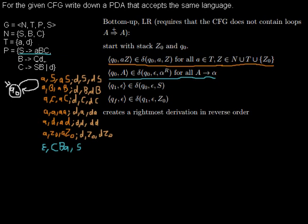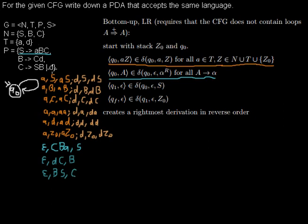I want to do the same for all the other rules. For the second rule, I read epsilon from the input string, read 'd', 'c' from the stack in reverse order, and push 'b'. For the third rule, I read 'b' and 's' and push 'c'. For the last rule, I read 'd' — which is the same forward as backward — and push 'c'. Now we are done with the second line.